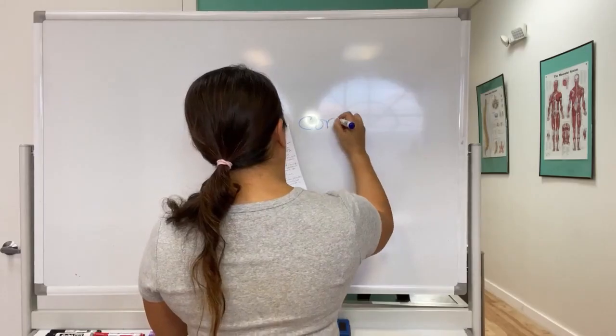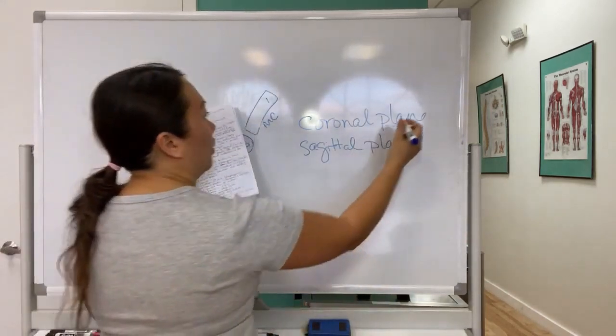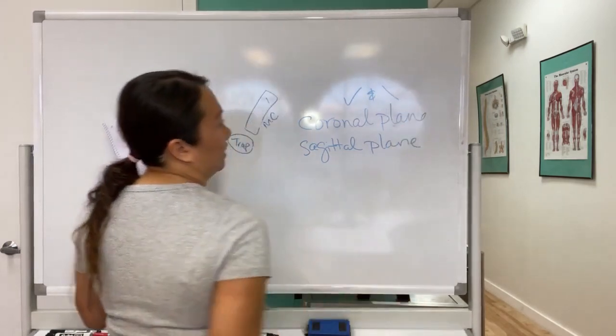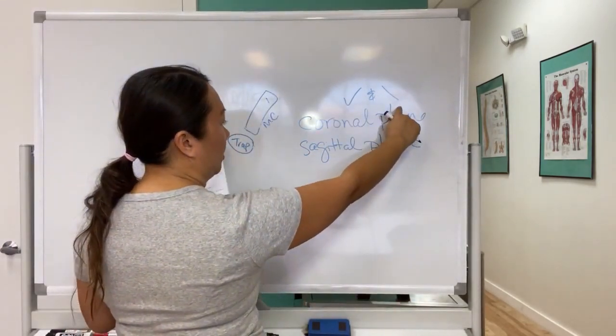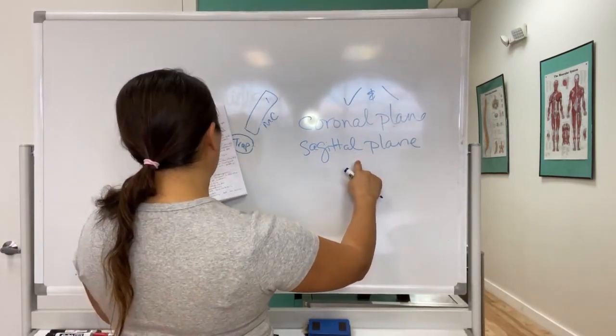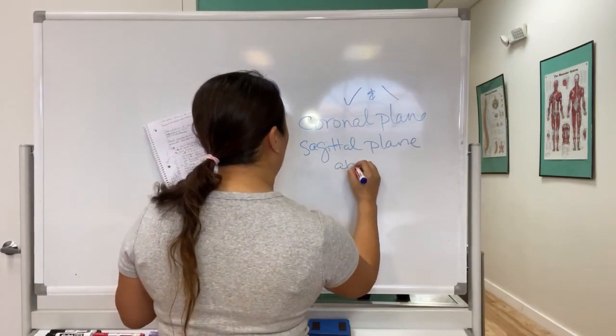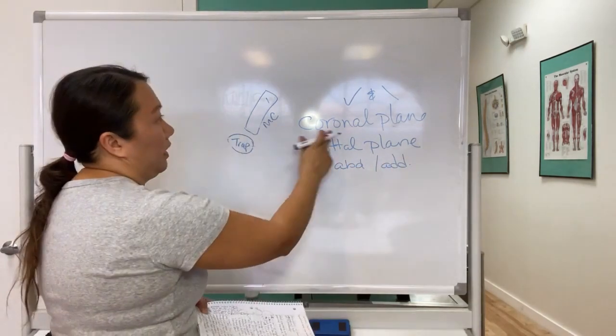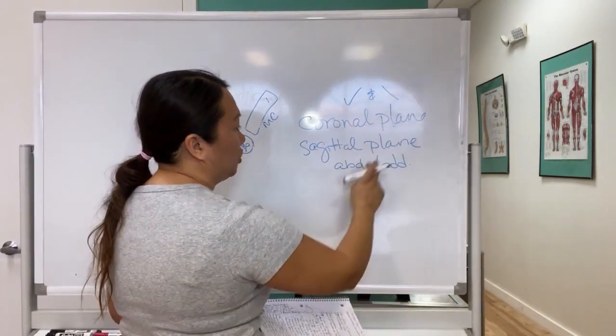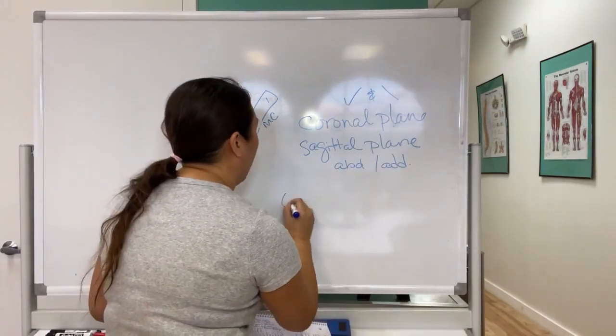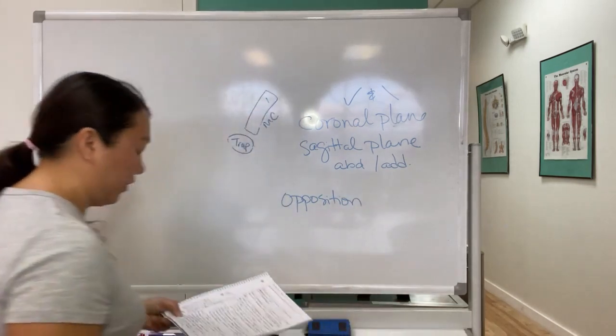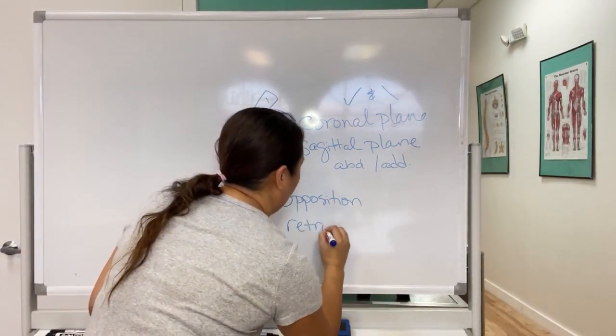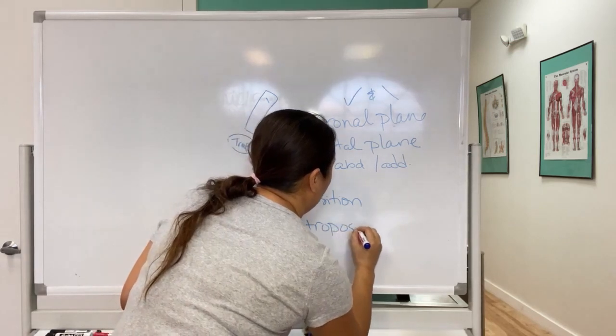So essentially, you have your coronal plane goes into flexion and extension. That's how I write flexion and extension. Your sagittal plane is the one that goes into abduction and adduction. Besides flexion, extension, abduction, and adduction, you have opposition. And then what they call retroposition.